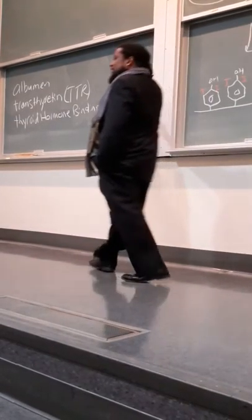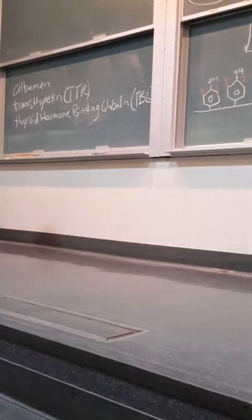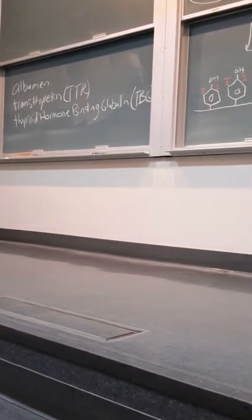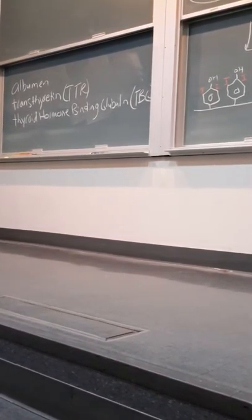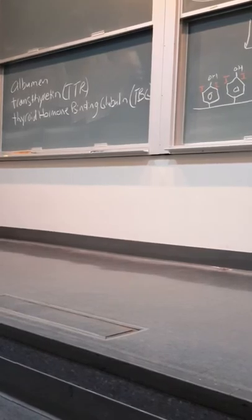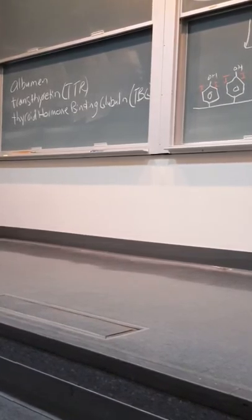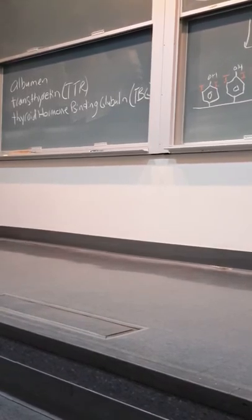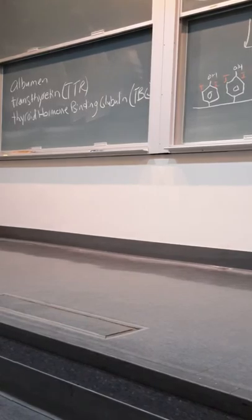Most of the thyroid hormone is carried by TBG, which I think is in the same family as CBG — there's one protein per thyroid hormone. Even though albumin is like a bus — you can carry a whole bunch — TBG is like a taxi that only has one seat, but it has the highest affinity. So most of the thyroid hormone is with the TBG.